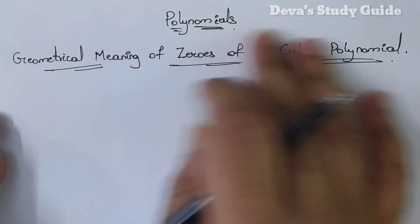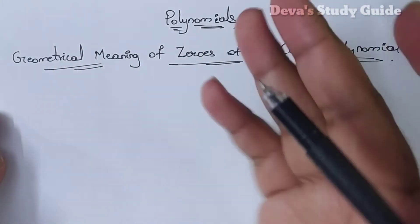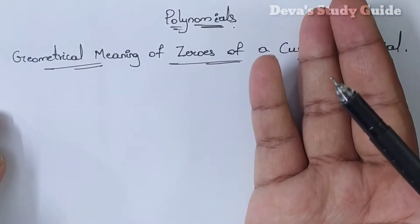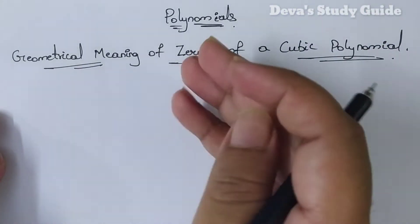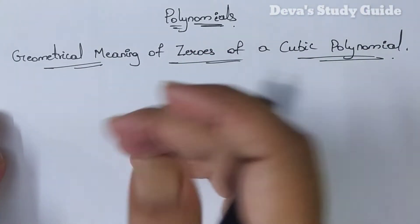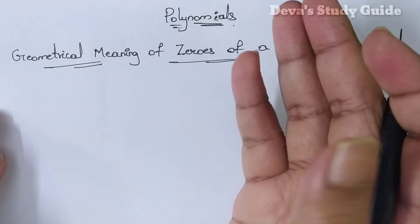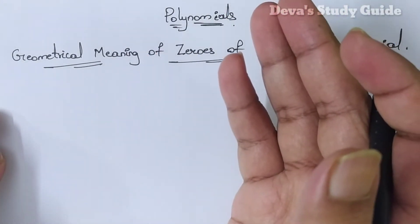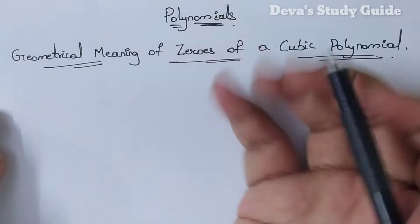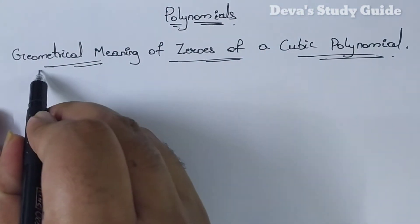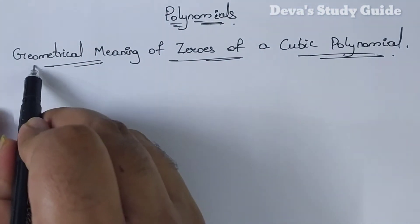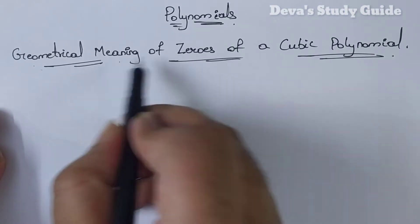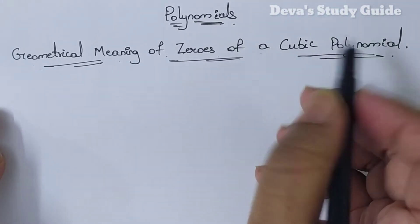Hello friends, welcome to Devastaticate. Previously we discussed the graphical representation of a quadratic polynomial. Today we have the geometrical meaning of a cubic polynomial.